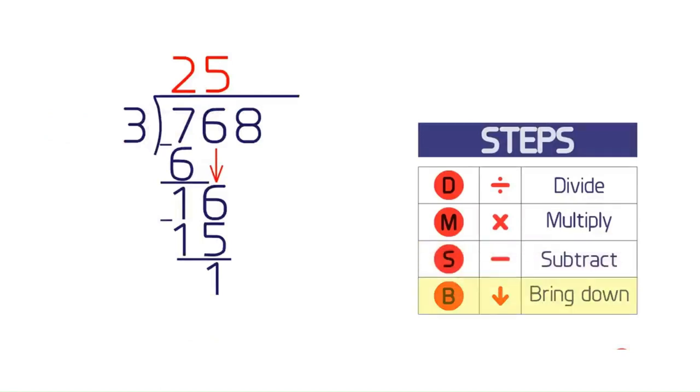Then bring down the next number, 8, to make the new number 18. Another cycle is complete, so begin the next cycle by asking how many times 3 goes into 18. That is, what's 18 divided by 3?